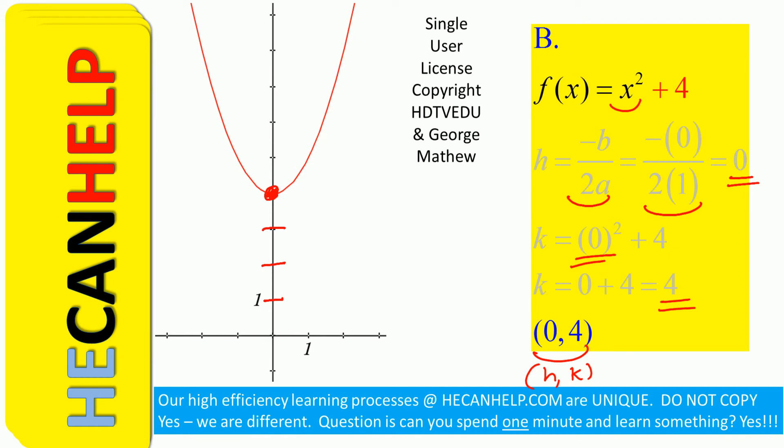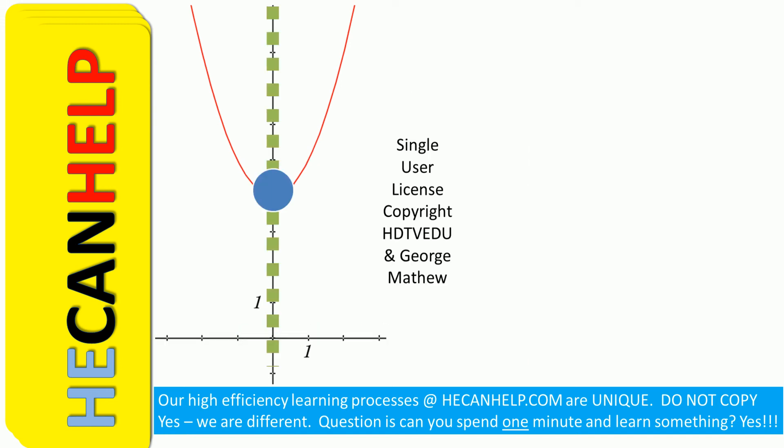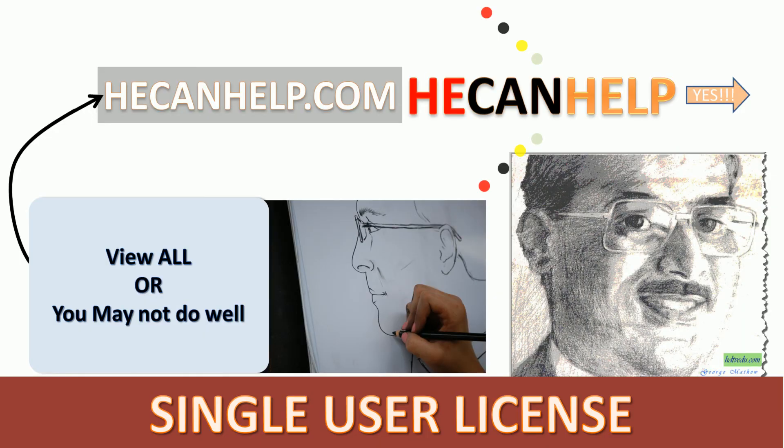Please don't forget the graph is symmetric about the vertex. This graph does not touch the x-axis, so no x-intercepts. Here is the axis of symmetry at x = 0. The vertex is (h,k) = (0,4).